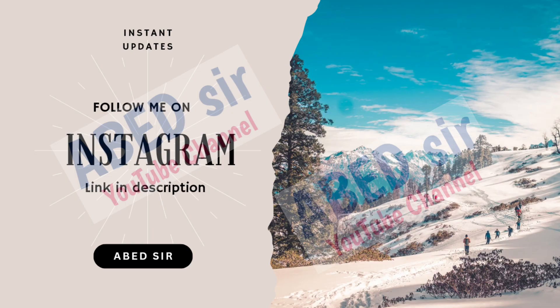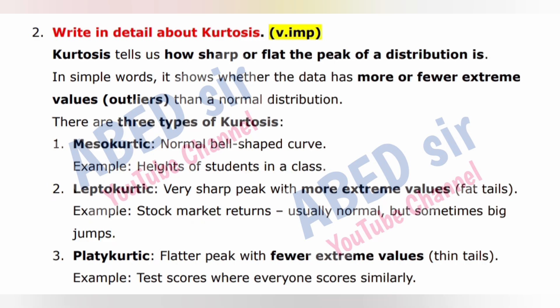Next important short question: Write in detail about kurtosis. Kurtosis tells us how sharp or flat the peak of a distribution is. In simple words, it shows whether the data has more or fewer extreme values (outliers) than a normal distribution. There are three types of kurtosis. Type 1: Mesokurtic — normal bell-shaped curve.